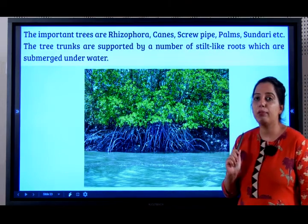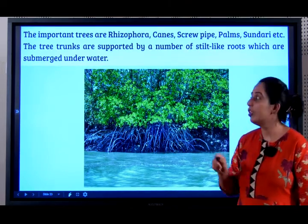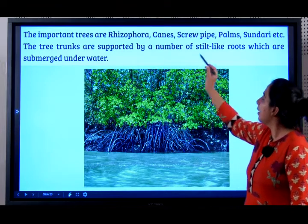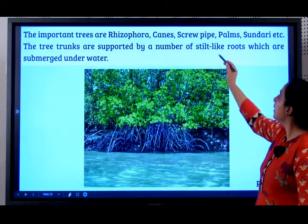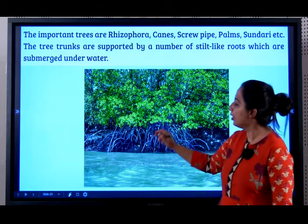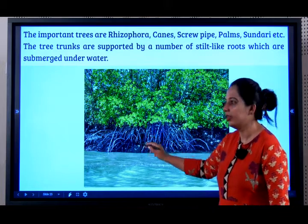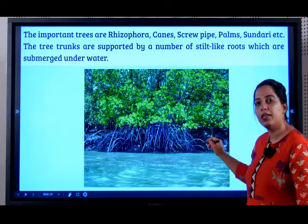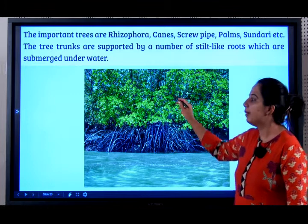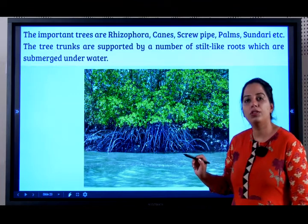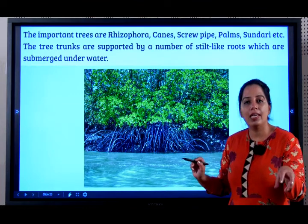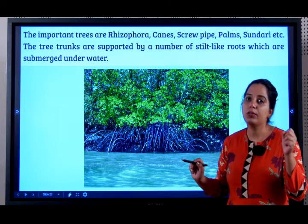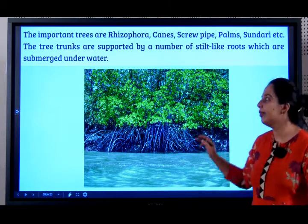Sundari is a very important example you all should learn. The tree trunks are supported by a number of stilt-like roots which are submerged under water. These roots help the plant to filter soil and take up water through its xylem tissue.